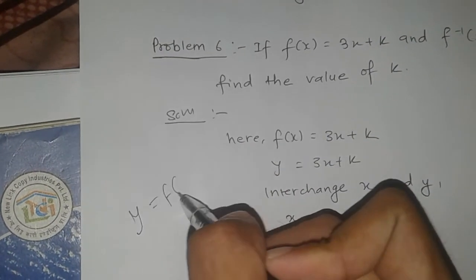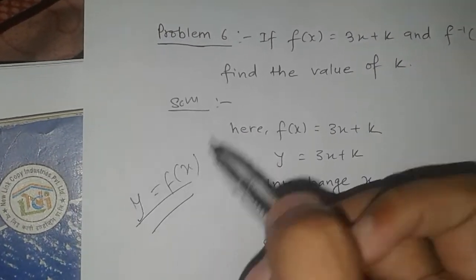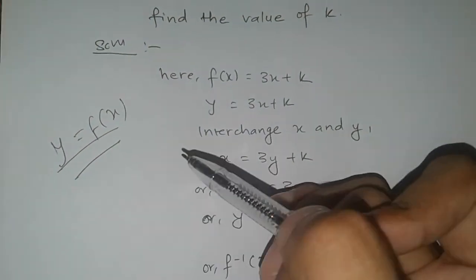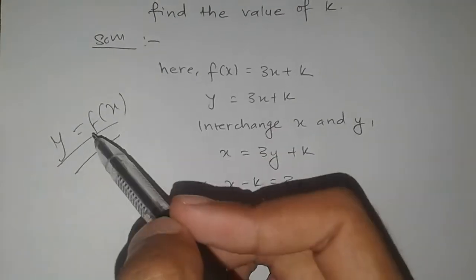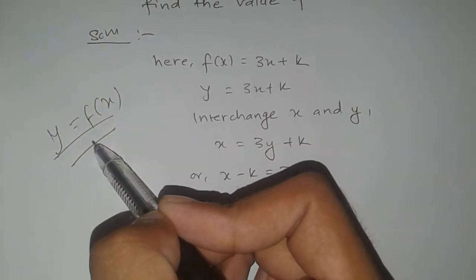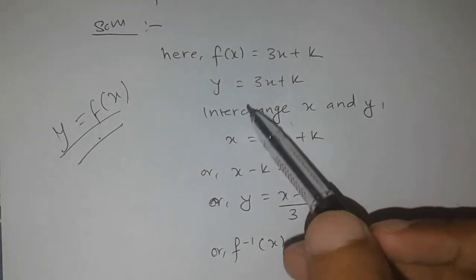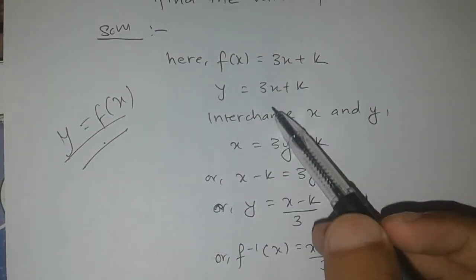In class 10, class 11, and class 12, this concept is applicable. The key is to interchange x and y, and then find the inverse. So we interchange: where y was, put x, and where x was, put y.